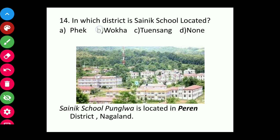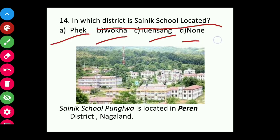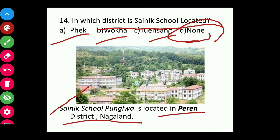Question fourteen: In which district is the Sainik School located — Pek, Wokha, Tuensang, or Peren? The answer is Peren. Sainik School is located in Peren district of Nagaland.